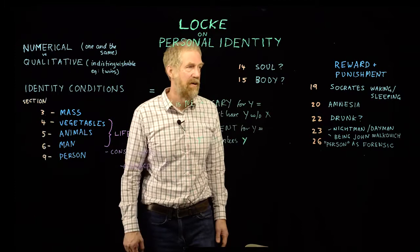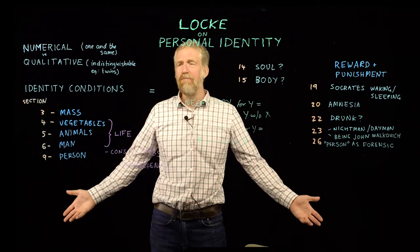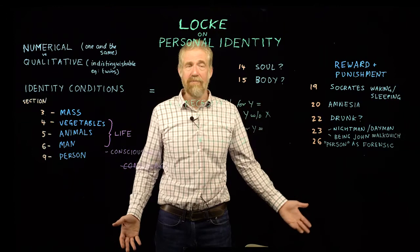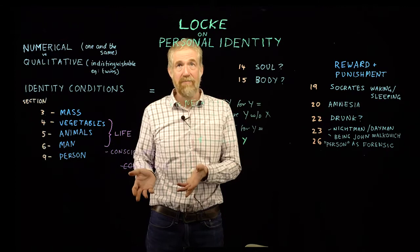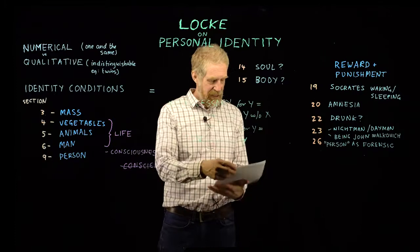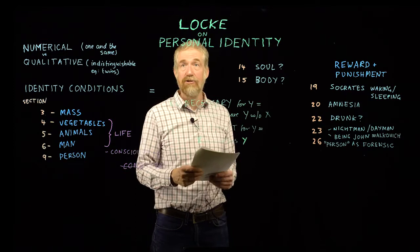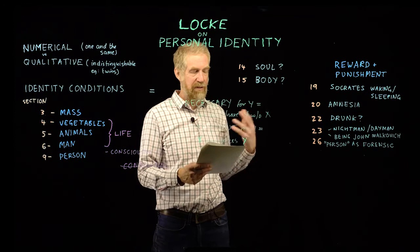Now, what his critics say - and he imagines his critics in this section - is: but we punish drunk people all the time after they've sobered up for what they do when drunk, even if they can't remember it. And Locke says: yeah, I know we do, and the reason is because we're fallible people and we can't tell if they really can't remember it - we think they're just trying to get out of it. So we punish them because we're humans. But God knows, and God on the day of judgment will punish only the ones who literally remember it. He says at the end of section 22: 'In the great day wherein the secrets of all hearts shall be laid open, it may be reasonable to think no one shall be made to answer for what he knows nothing of.'